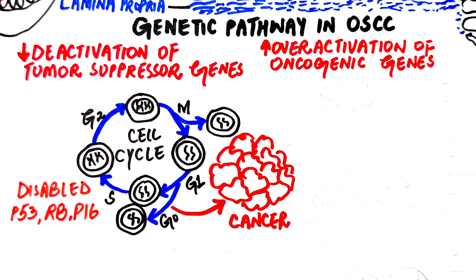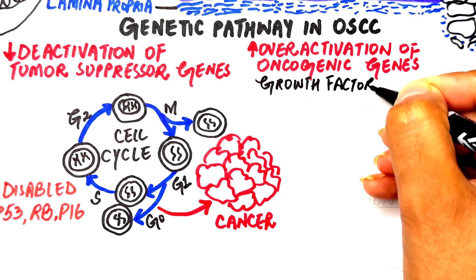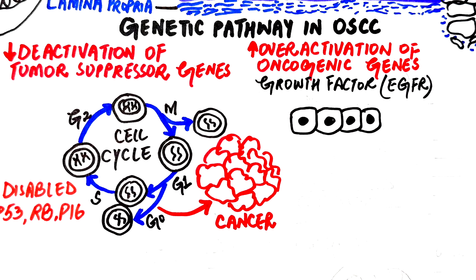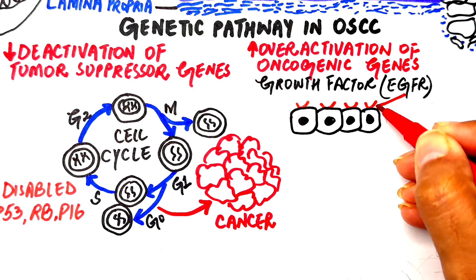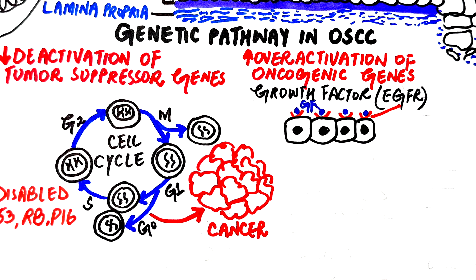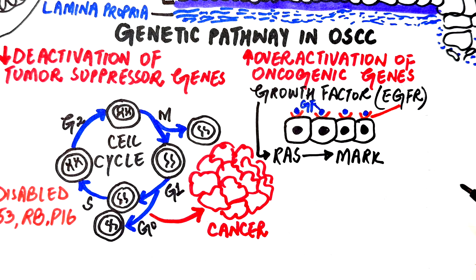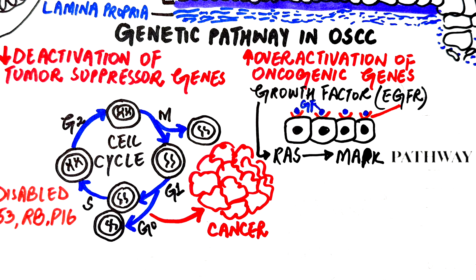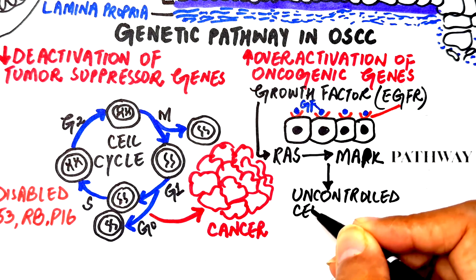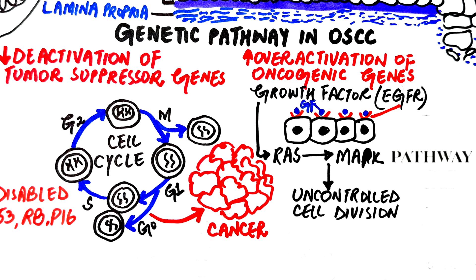At the same time, oncogenic pathways become active. Under normal conditions, a cell only grows when a growth factor binds to a receptor on the surface of an epithelial cell, such as the epidermal growth factor receptor. This triggers a signal inside the cell through proteins like Ras and leads to controlled division via pathways like MAPK. But in cancer, the Ras gene is mutated and becomes permanently active even without any growth signal, causing the cell to keep dividing uncontrollably, leading to tumor growth.